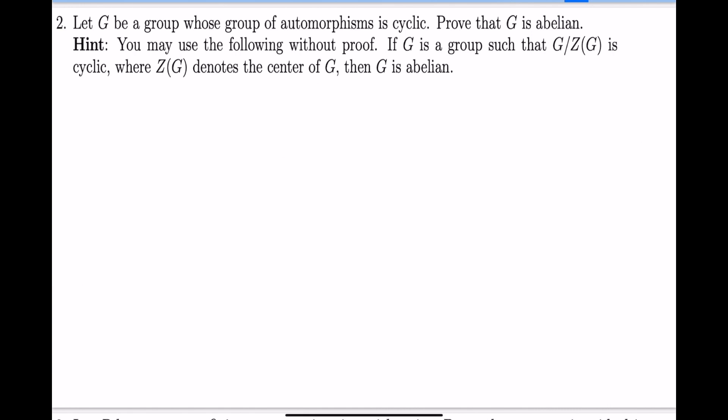Hello, everyone. Welcome back to another algebra video. In this video, we're going to be solving the second problem from the fall 2023 qualifying exam in algebra at UC Irvine. This exam isn't available online yet, but when it becomes available, I will post the link in the description. So let's read the problem, and then I'll talk about how I would approach this. It says, let G be a group whose group of automorphisms is cyclic. Prove that G is abelian. So that's what we want to prove.